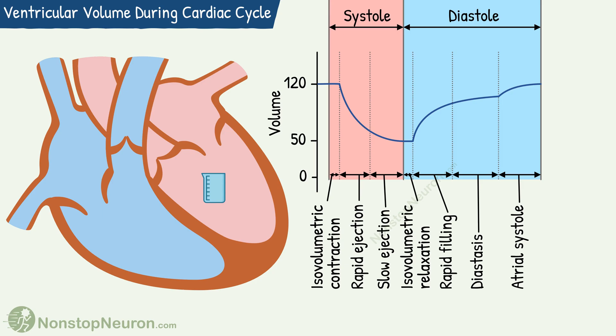Next there will be isovolumetric contraction and then ejection, which leads to a fall in the volume. This cycle is repeated. This is how ventricular volume changes during a cardiac cycle.